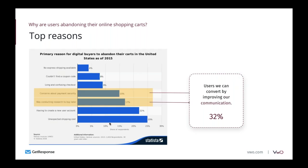The next group includes people with concerns about payment security and those conducting research to buy later. If you improve your communication, you could convert around 32% of those who abandoned. Payment security is a common issue — if you check out a website you haven't seen before, you're not sure whether your money will be processed correctly or go into the right hands. There are ways to work around this and improve your shopping cart.